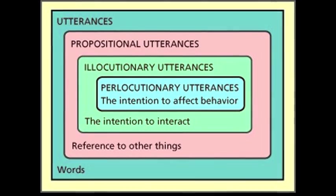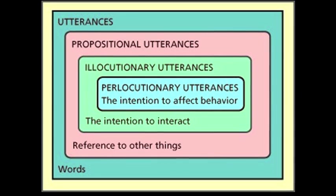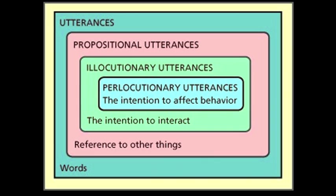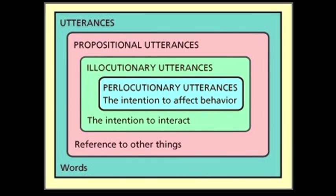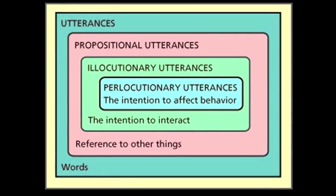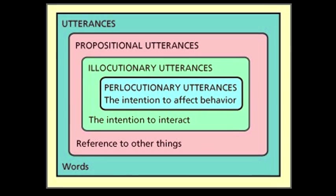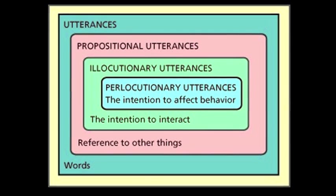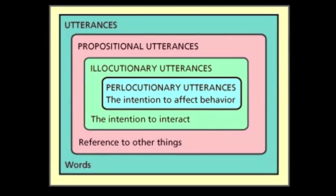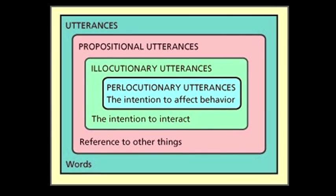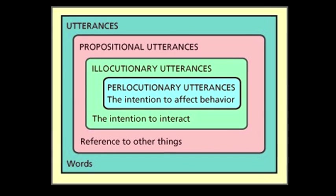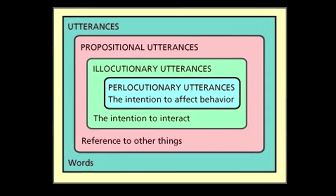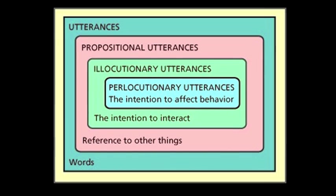These categories are helpful when thinking about the ways that humans interact with each other and with their environments through language. When speaking to and around others, more often than not, we humans are in fact attempting to affect the behavior of others. These categories are useful, but is there a way in which all of these utterances can be interpreted as perlocutionary — could all of them be reinterpreted as seeking to affect the behaviors of others?